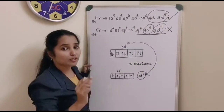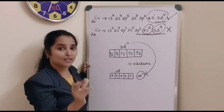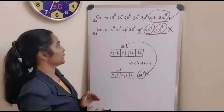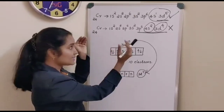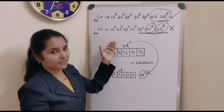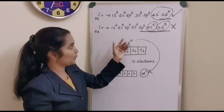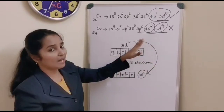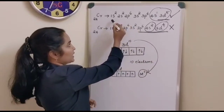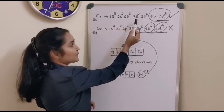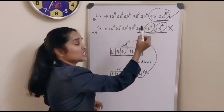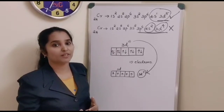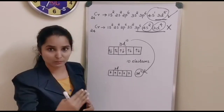What is the reason? In order to attain the extra stability offered by the half-filled orbital. So for chromium with atomic number 24, instead of having the electronic configuration 1s2, 2s2, 2p6, 3s2, 3p6, 4s2 and 3d4, it has the configuration 1s2, 2s2, 2p6, 3s2, 3p6, 4s1 and 3d5, in order to get the extra stability offered by the half-filled orbital in the outermost shell.